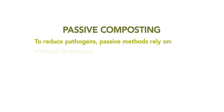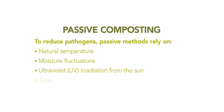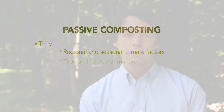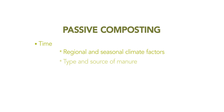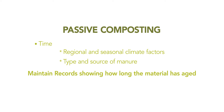To reduce pathogens, passive composting methods rely on natural temperature, moisture fluctuations, ultraviolet radiation from the sun, and time. This process will vary based on seasonal and regional factors such as temperature and rainfall, as well as the type and source of the manure. You will need to maintain records showing how long the material has been aged.